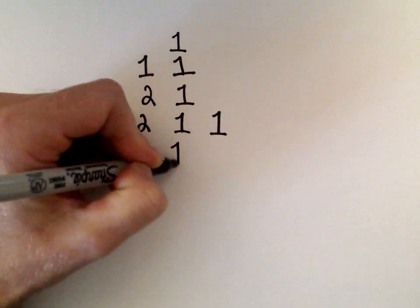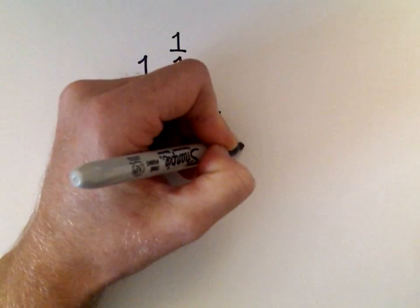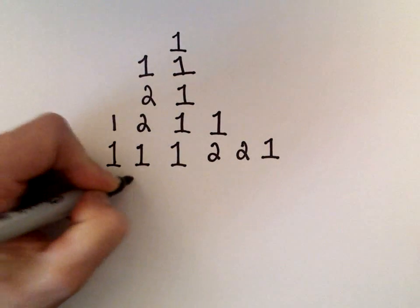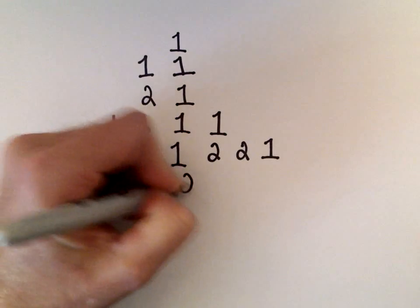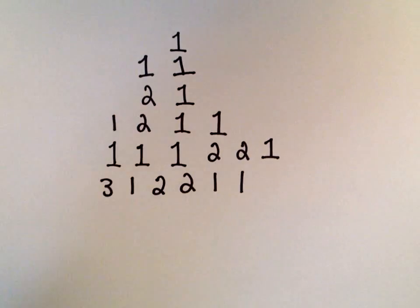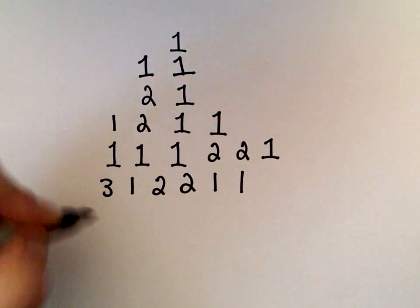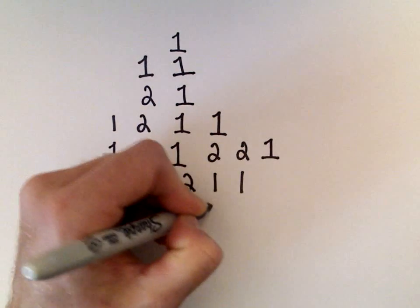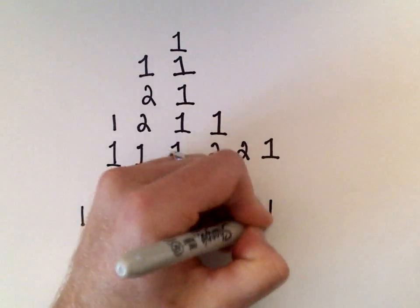Then after that we've got three one two two two, one one. Now next comes one three one one two two, two, one.